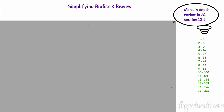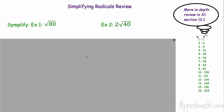We're going to be simplifying radicals — a quick review. I expect you to know this from Algebra 1. If you need a more in-depth review, go to the Algebra 1 section at flipmap.com, section 12.1. Here are the first 15 perfect squares — for example, the square root of 225 is 15.